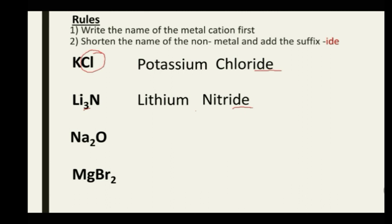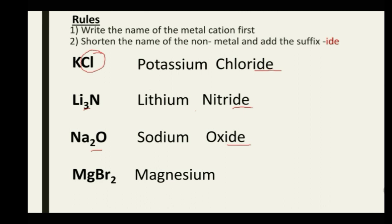Now let's check the answers for the practice compound Na₂O: sodium is named first because it's the metal. The 2 is not taken into consideration. We focus on oxygen, the non-metal, which has a root name of 'ox' — adding '-ide' gives oxide. So Na₂O is sodium oxide. For MgBr₂: the metal is magnesium, named first. The non-metal is bromine, with a root name of 'brom' — adding '-ide' gives bromide. The 2 is ignored. So MgBr₂ is magnesium bromide.